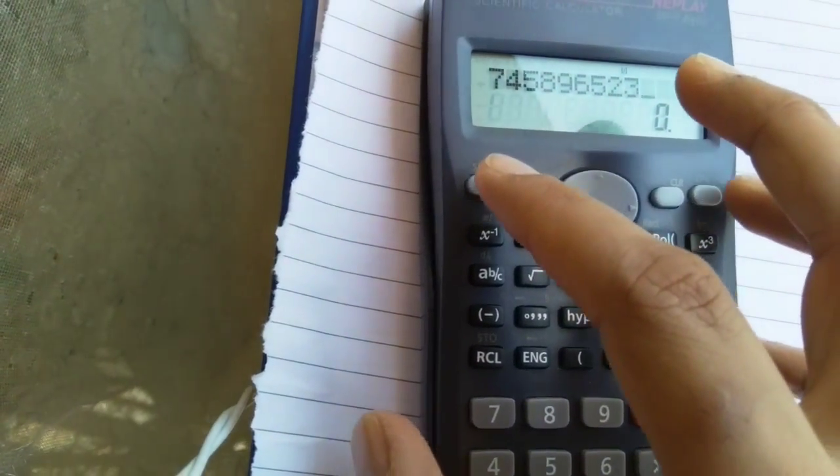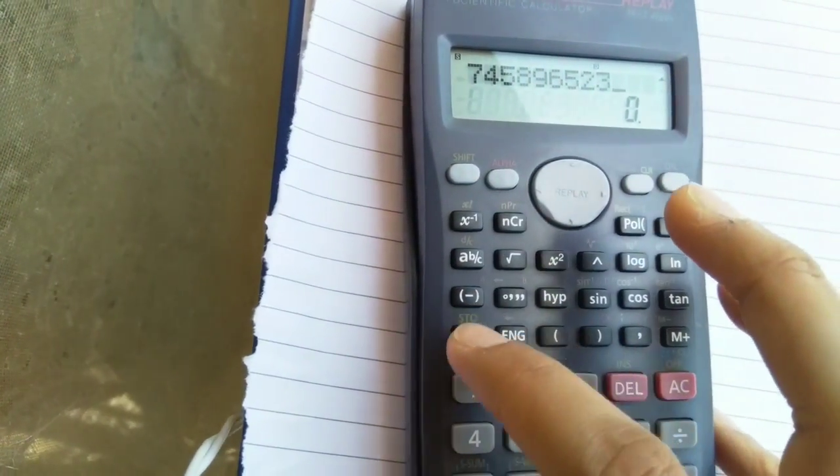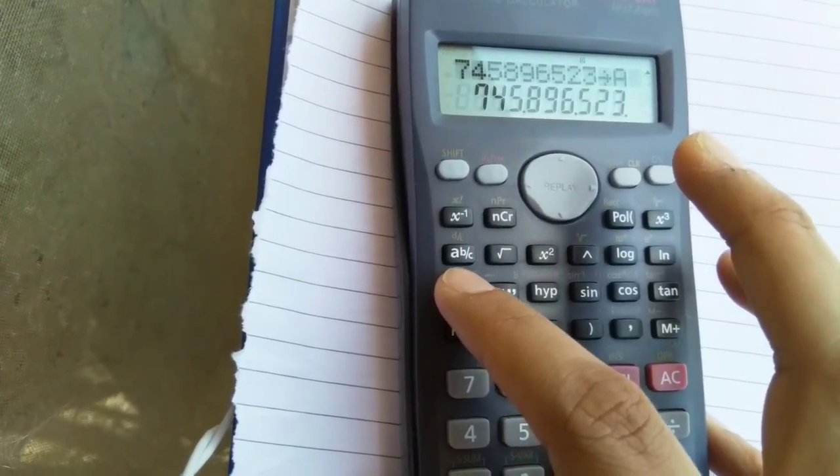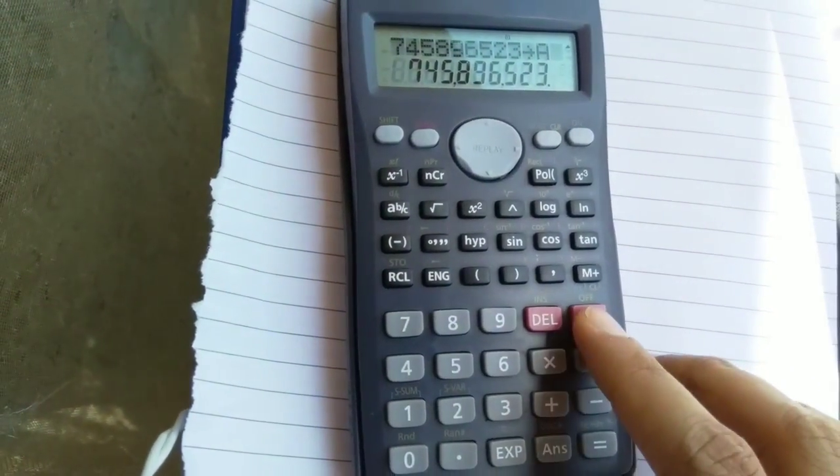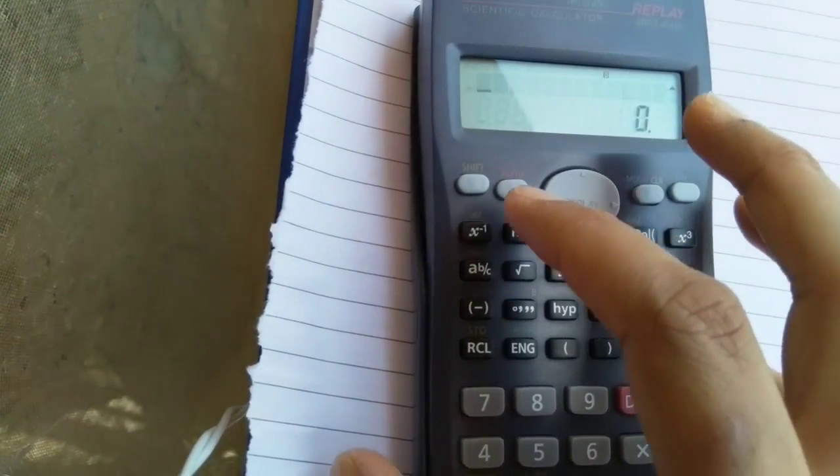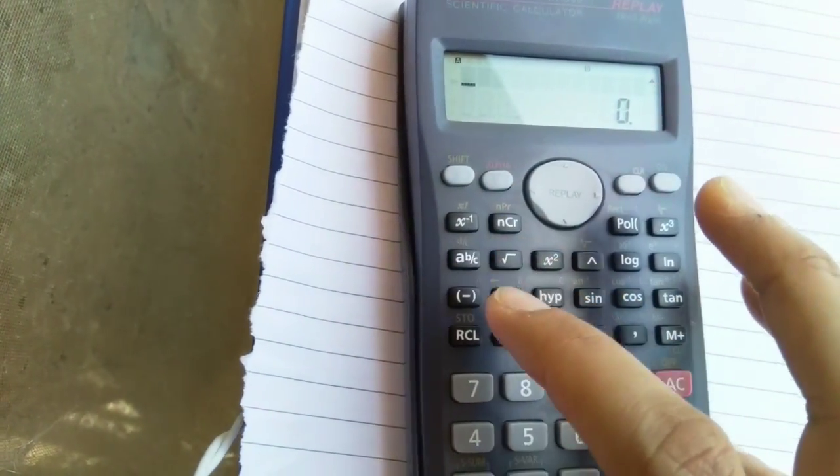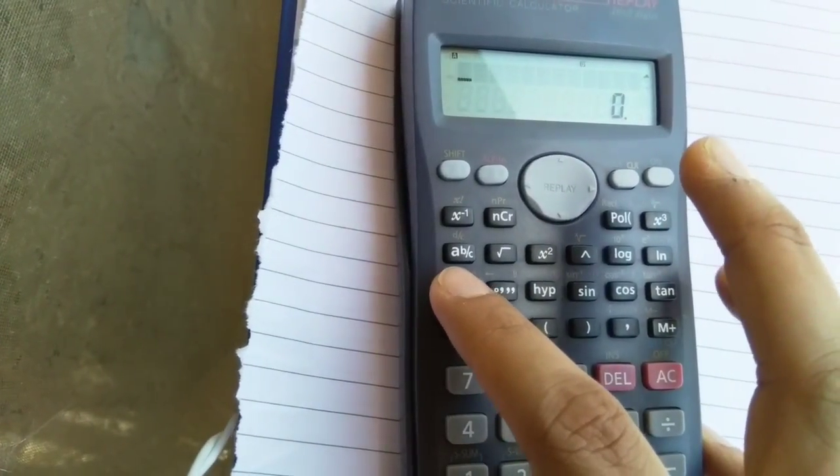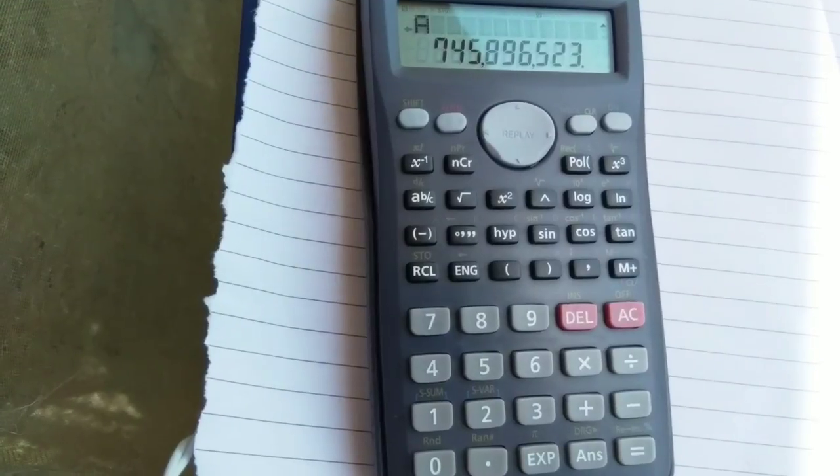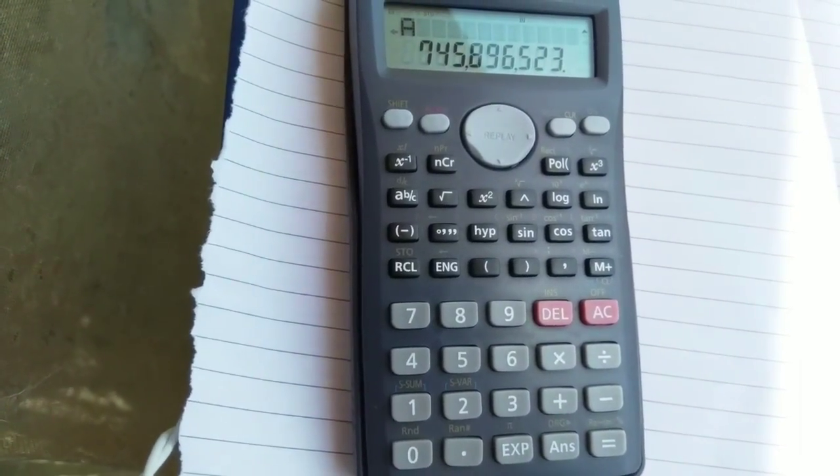Then I want to save it. Then I go here, shift. Then I press RCL button, and then I press A. So now it's stored. I remove, everything is gone now. I want to recall my number. I go to alpha, then I go to A button, this is the one. And then I press equal. So as you guys see, my number came up on the screen.